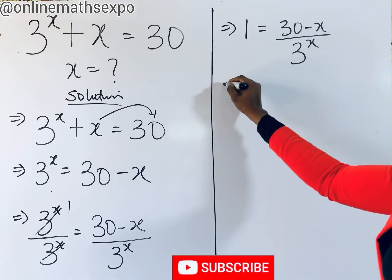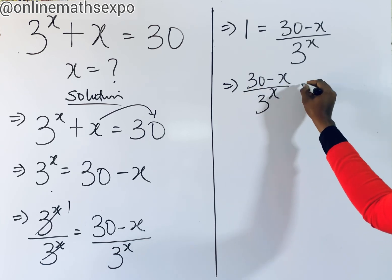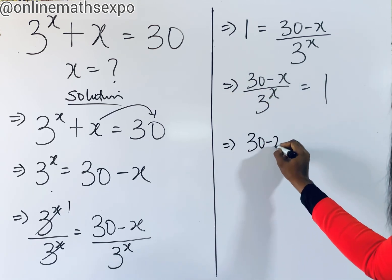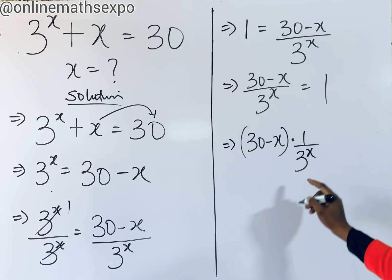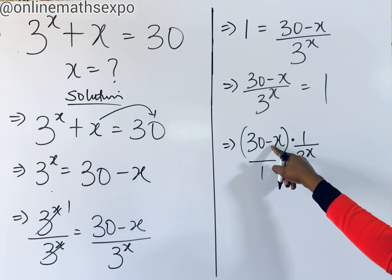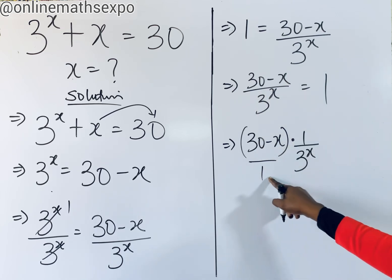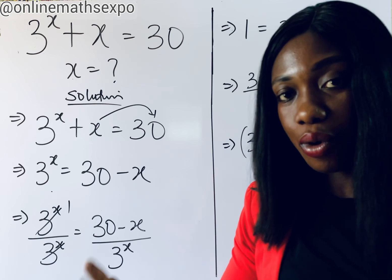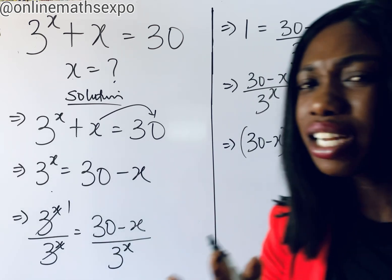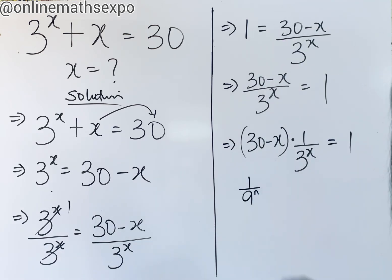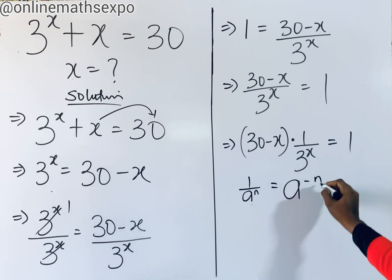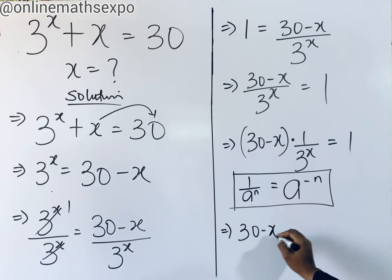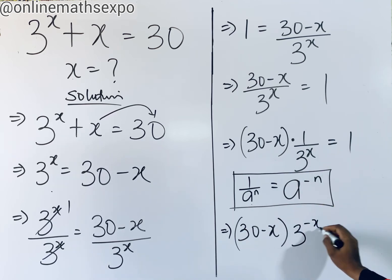This can also be rewritten as 30 minus x divided by 3 to the power of x equals 1, or equivalently 30 minus x multiplied by 1 over 3 to the power of x equals 1. Remember that for every 1 over a to the power of n, it is always equal to a to the power of negative n. Applying this rule, we have 30 minus x multiplied by 3 to the power of negative x is equal to 1.